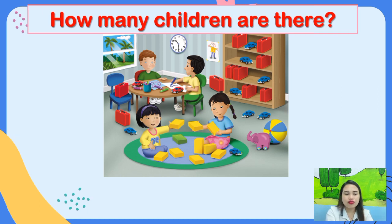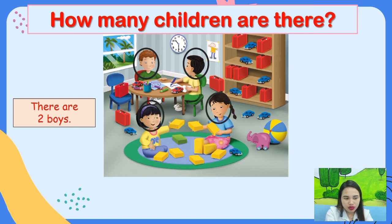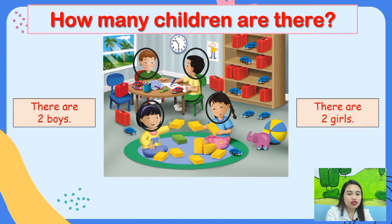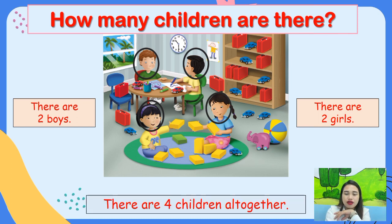How many children are there? 1, 2. How many boys are there? There are two boys. How about the girls? 1, 2 — there are also two girls. How many children are there altogether? Two and two is four. There are four children altogether.